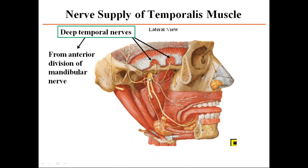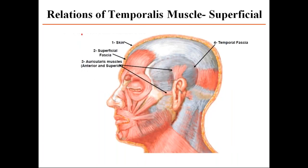The nerve supply of the temporalis muscle is from the deep temporal nerve — there are two deep temporal nerves, which arise from the anterior division of the mandibular nerve. This nerve supplies the temporalis muscle from its deep surface and is seen only after removal of the muscle, not on the superficial surface.